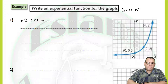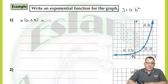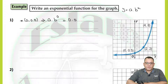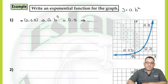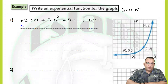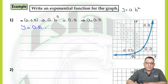By substitution, x is equal to 0 and y is equal to 0.5. So we have a multiplied by b to the power 0 equals 0.5. By solving, a multiplied by 1 — because b to the power 0 equals 1 — equals 0.5. From that we can say that a equals 0.5. So we can rewrite the equation: y equals 0.5 multiplied by b to the power x. That's the equation we'll use.